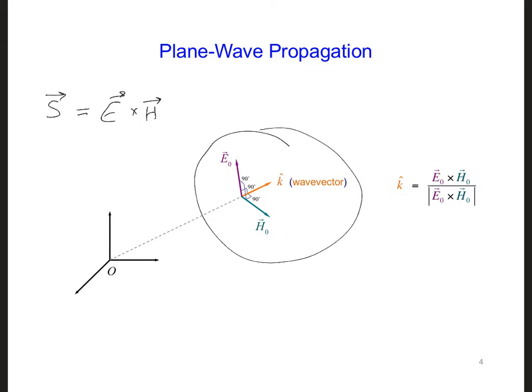This Poynting vector equals the instantaneous power transferred by electromagnetic fields at a point in space and time. So instantaneous power flow, a moment in space and time. So for example, here I'll just say S, in general, could be a function of X, Y, Z, and T.